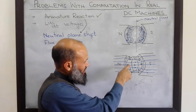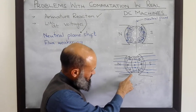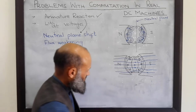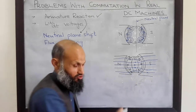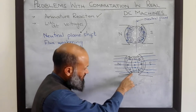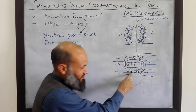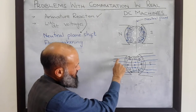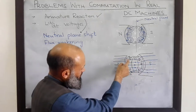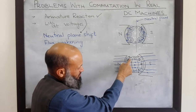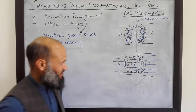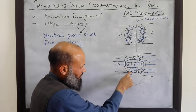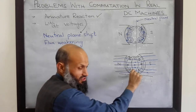At this end of the north pole, the direction of the MMF due to the main poles — which goes from the north pole to the south pole — and the direction of MMF due to current in these coils are in the same direction. Whereas at this other end, the direction of the main magnetic field is from north pole to south pole, but the direction of MMF due to current in the coils is in the opposite direction. So at this end, both the MMFs — due to main pole and due to currents — are in the same direction.